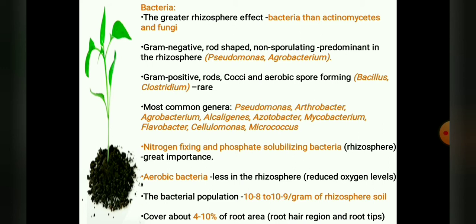From the agronomic point of view, the abundance of nitrogen-fixing and phosphate-solubilizing bacteria in the rhizosphere assumes great importance. The aerobic bacteria are relatively less in the rhizosphere because of the reduced oxygen level due to root respiration. The bacterial population in the rhizosphere is enormous, ranging from 10⁸ to 10⁹ per gram of rhizosphere soil. They cover about 4 to 10% of the total root area, occurring profusely on the root hair region and rarely at the root tips.